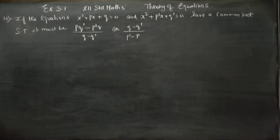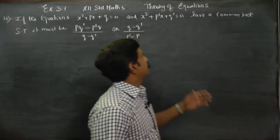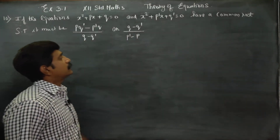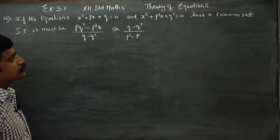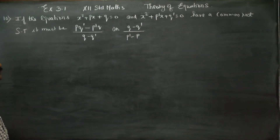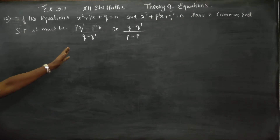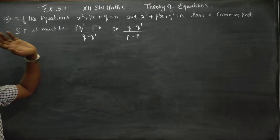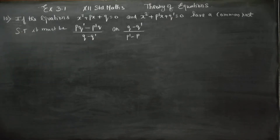Hello students. If the equations x squared plus px plus q equals 0 and x squared plus p-dash x plus q-dash equals 0 have a common root, show that it must be this or this.